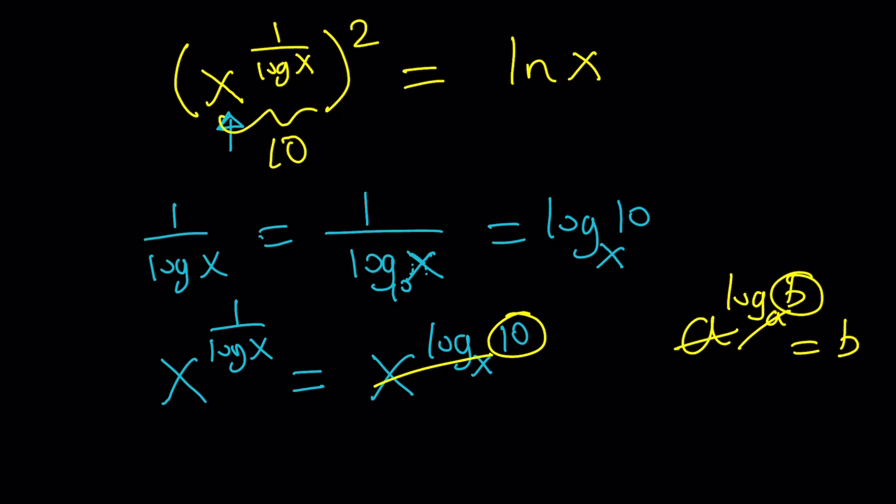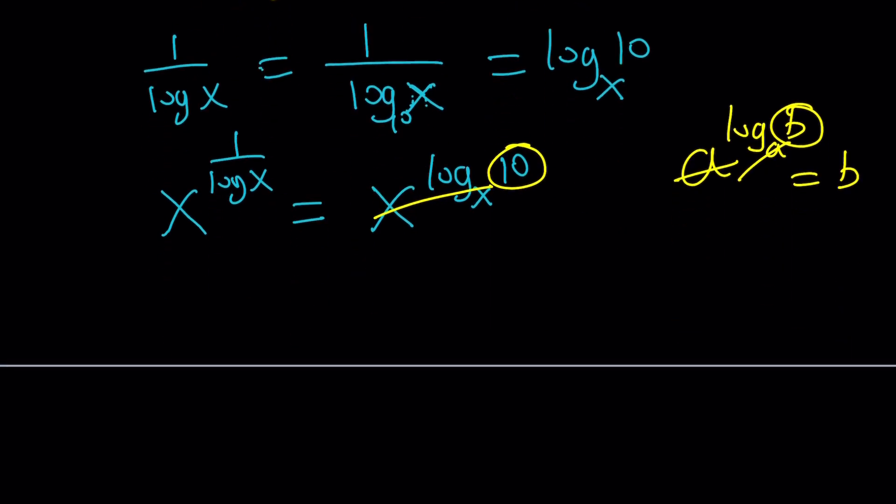So then we square the 10. That gives us 10 squared. So from here, we get ln x equals 100, which means x equals e to the power 100. And that should be the same answer that we found with the second method.